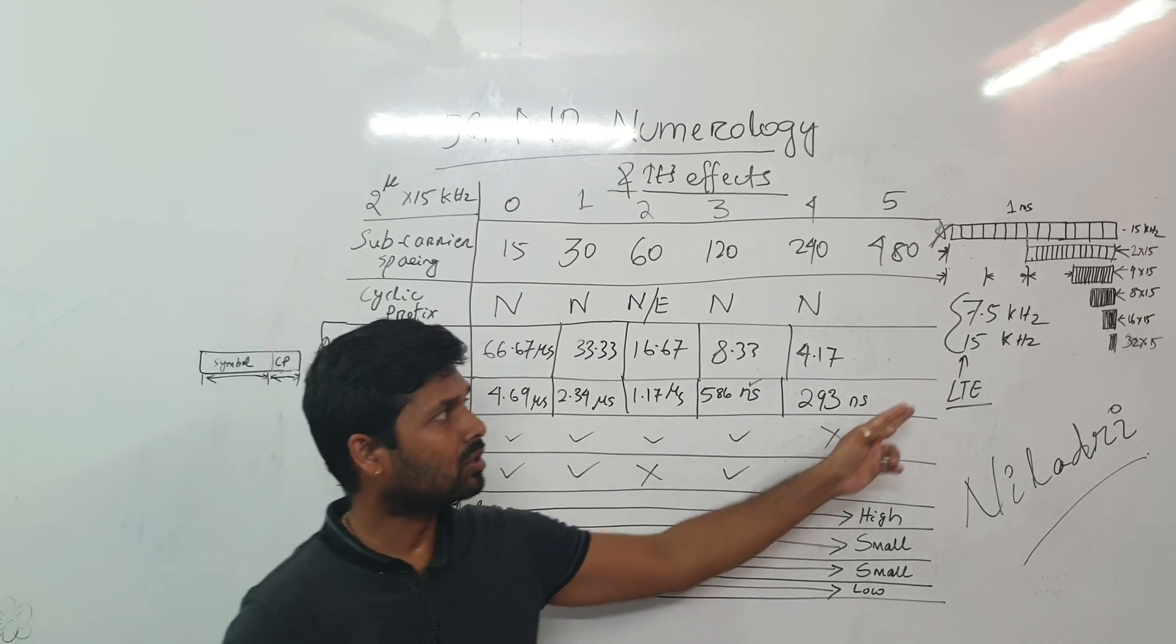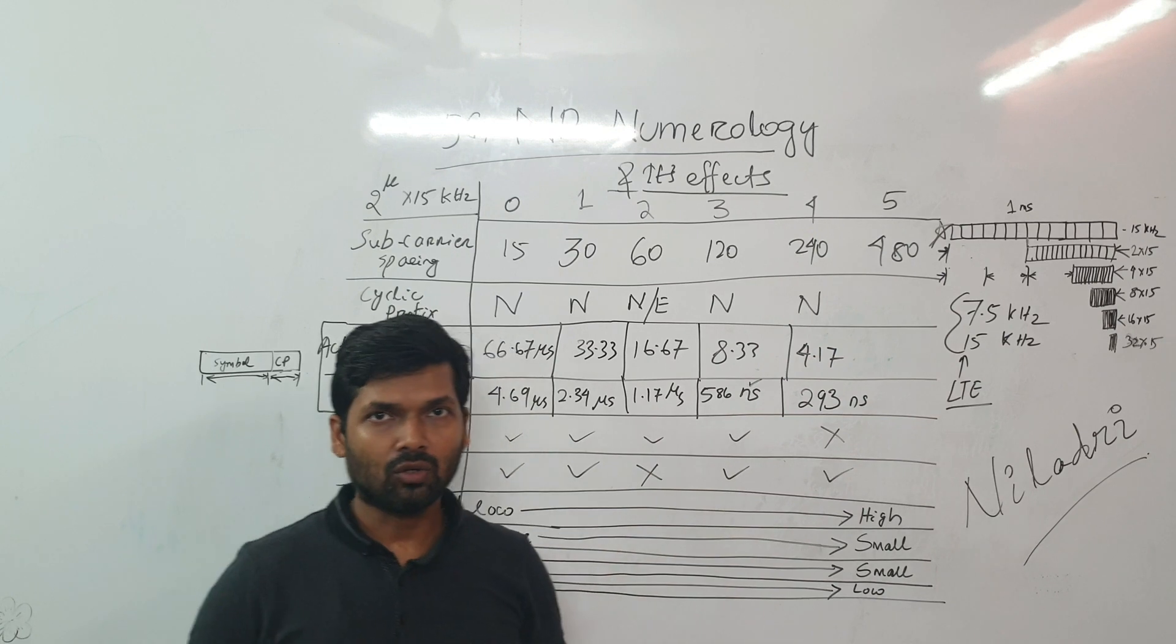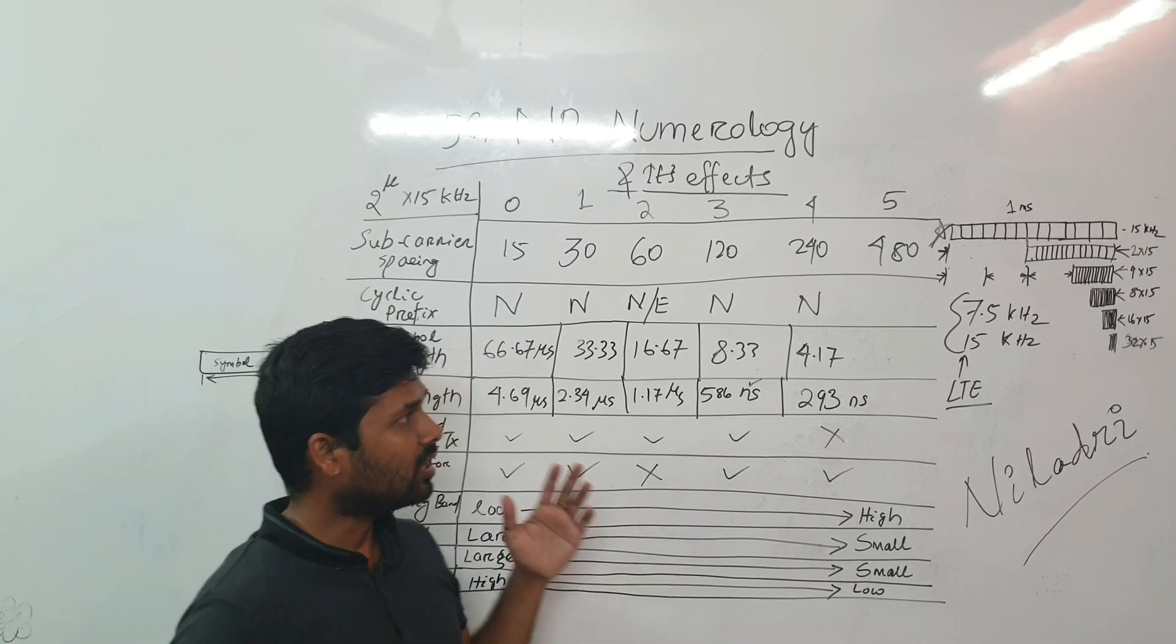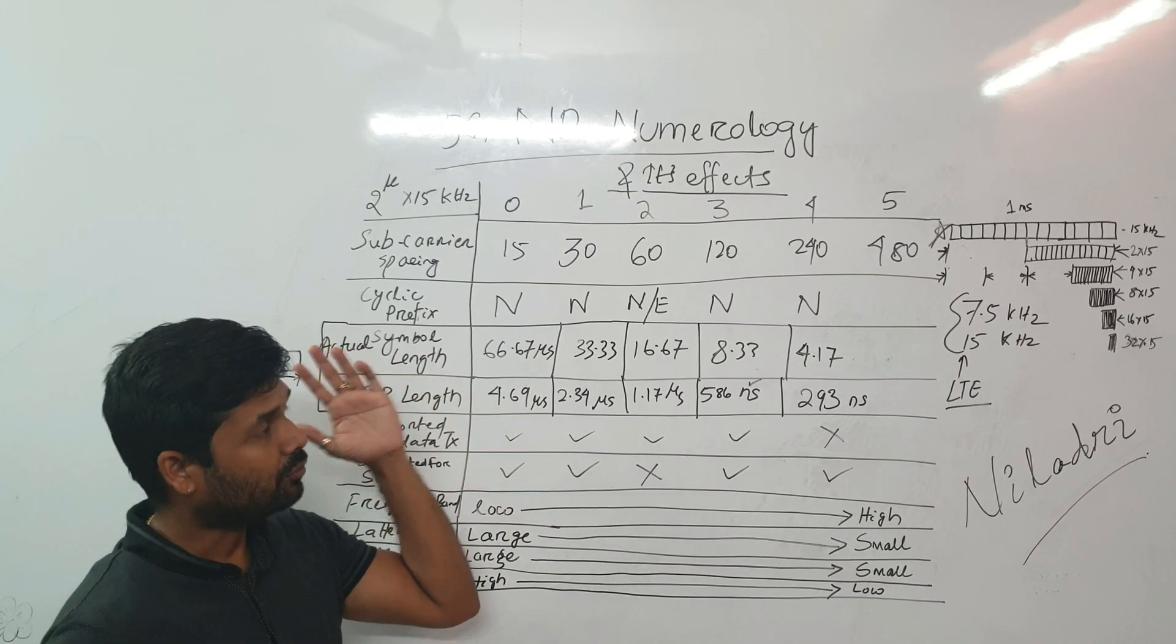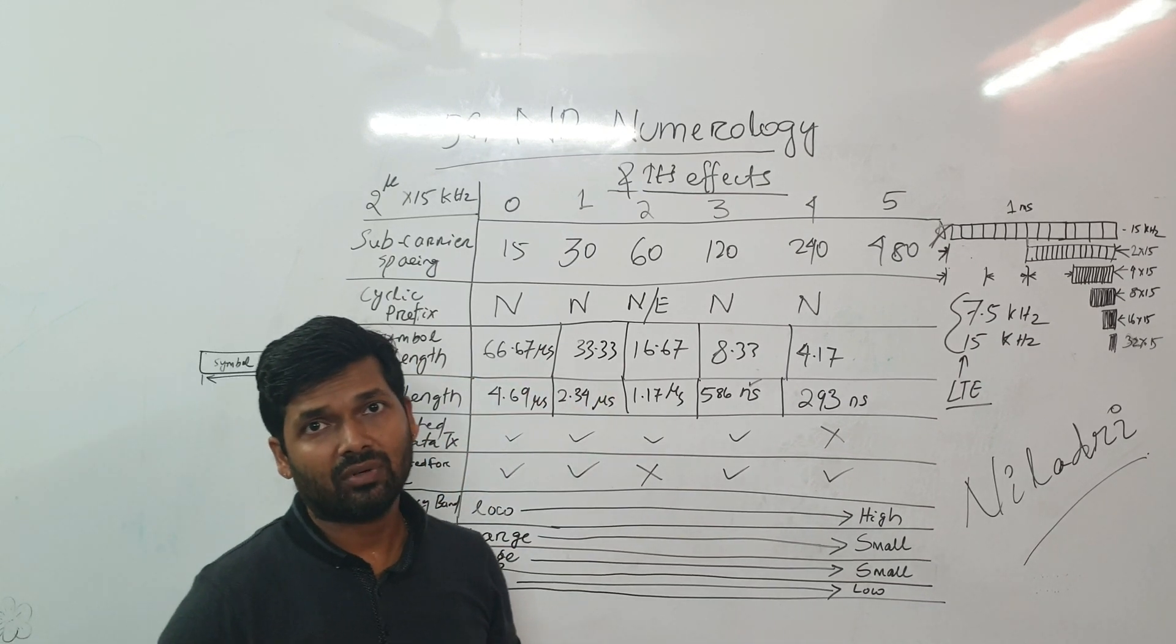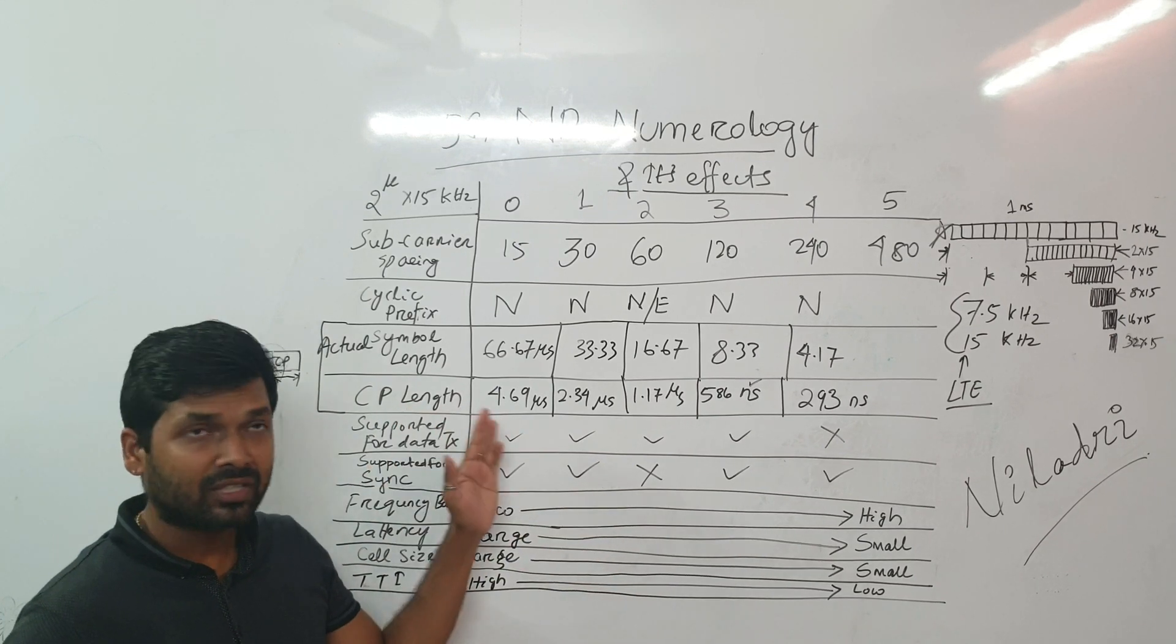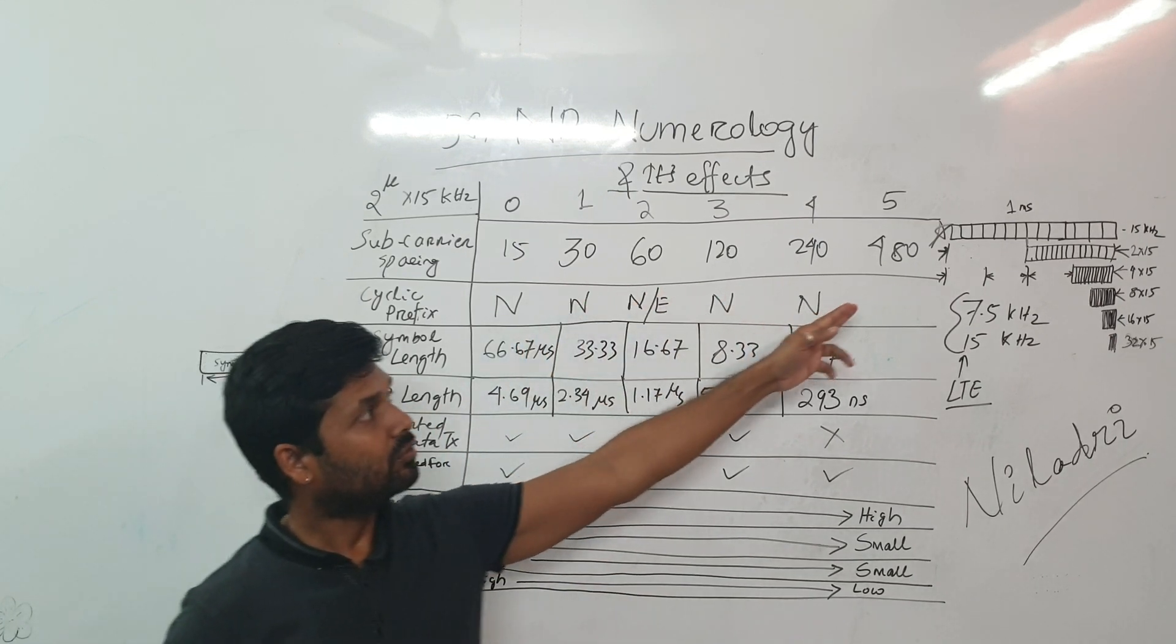However, most of the network used to have only 15 kilohertz subcarrier. Now in NR we have various types of OFDM numerology starting from 15 kilohertz till 480.